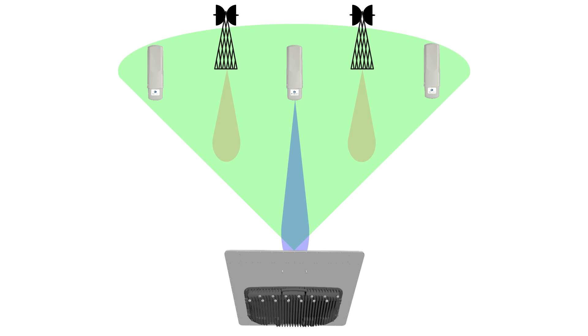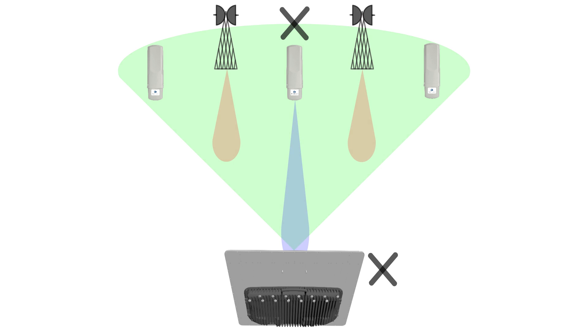This means that signals at the same frequency as the access point and subscribers that enter the access point antenna beam shape can interfere with signals from subscribers, causing data loss. Uplink beam forming mitigates this interference.